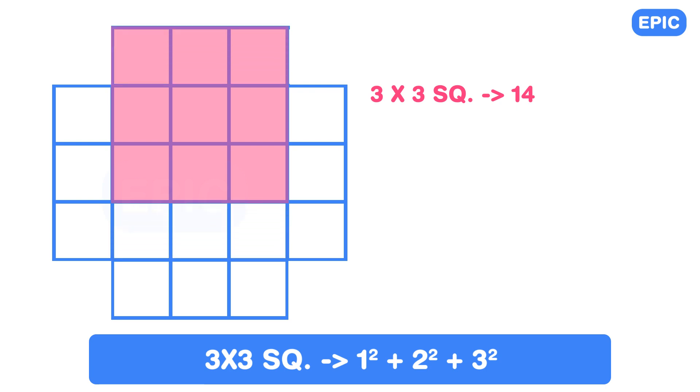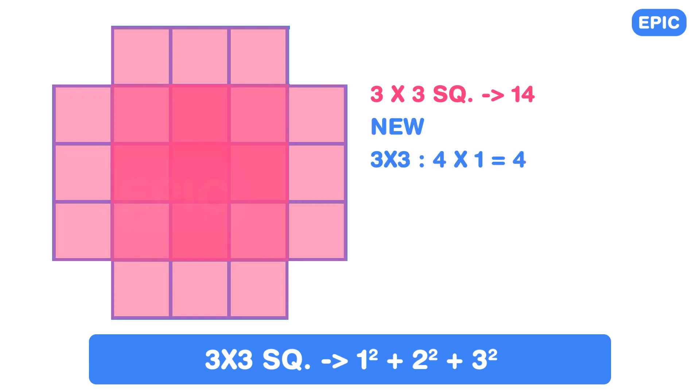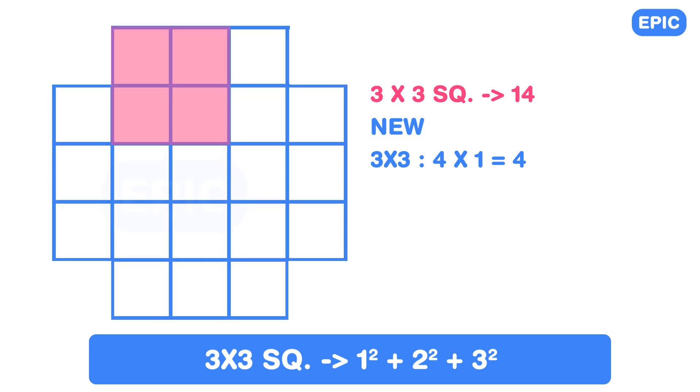Now a new 3 x 3 square can be formed at one of the sides. This can be done at all 4 sides so 4 new 3 x 3 squares can be formed. Similarly 2 more 2 x 2 squares can be formed at each side. So a total 4 x 2, 8 new 2 x 2 squares can be formed.